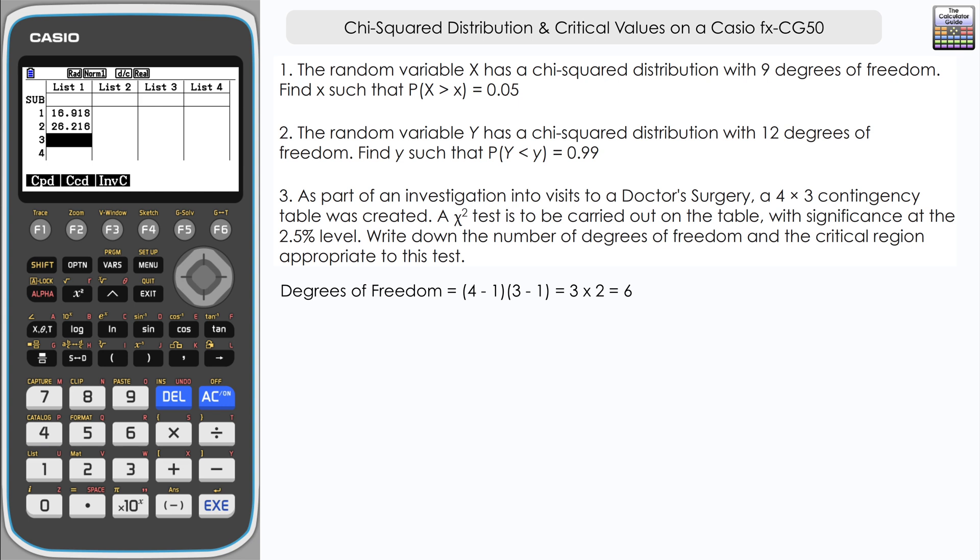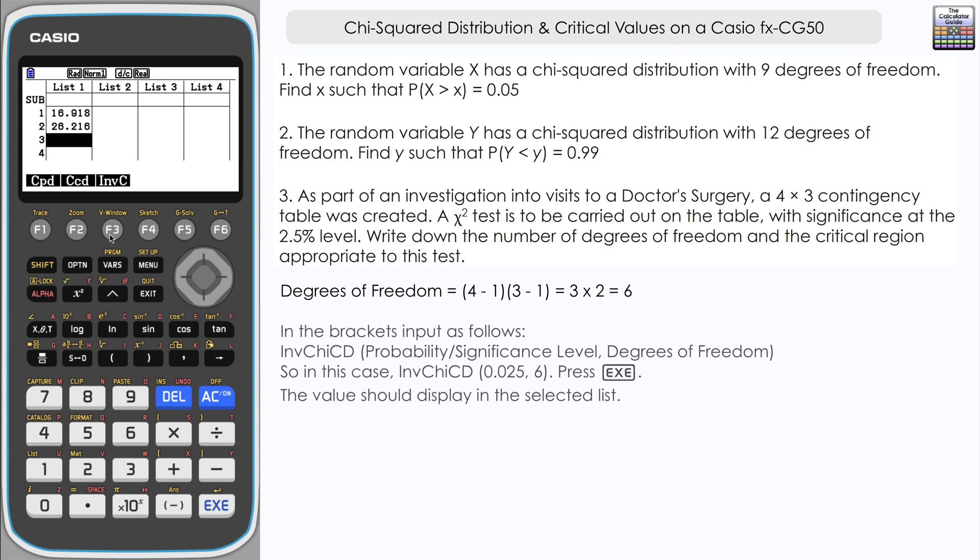So now that we know that, let's find out the critical region from the calculator. And once more it's inverse chi. We've got a 2.5 percent significance level, that is 0.025 as a decimal, comma, and then we've just worked out it's 6 degrees of freedom.